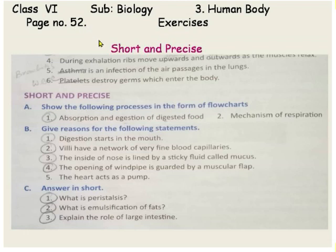We have completed the previous part, so we will start short and precise, Section A: show the following processes in the form of flowcharts. The first one is absorption and ejection of digested food.